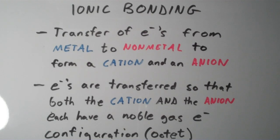And when we do Lewis structures for ionic compounds, electrons are transferred in a way such that both the cation and the anion each have a noble gas electron configuration, which most of the time is an octet. It could also be a duet. It just depends on the valency of it.